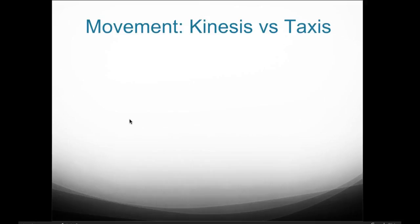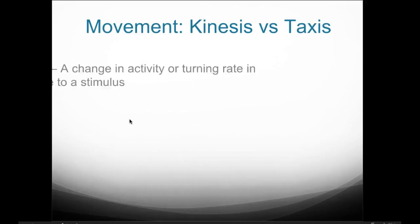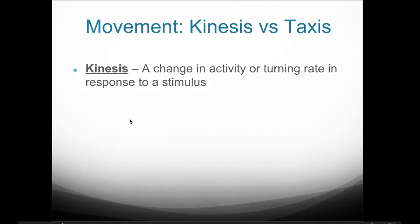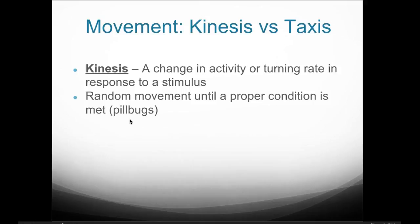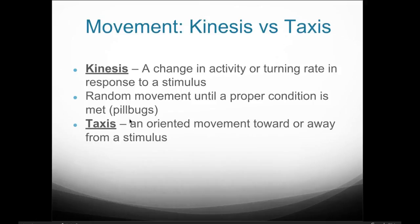The next big topic is movement associated with behavior, where kinesis and taxis come into play. A kinesis is a change in activity or turning rate in response to a stimulus — it's a random movement until the proper condition is met. You will see kinesis occur during our animal behavior lab. There will be no direct pattern seen with the movement of pill bugs or sow bugs; you will see them moving around in random patterns.